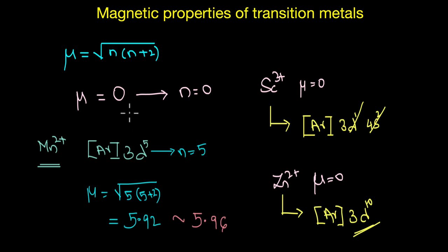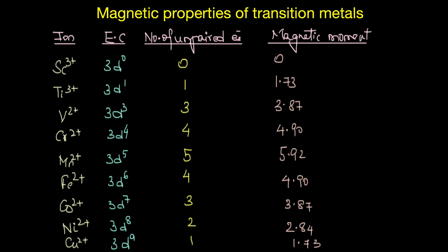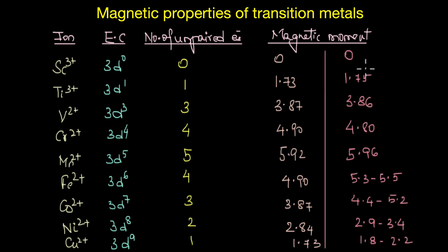You can similarly calculate the magnetic moment for other transition metal ions using this formula. Looking at the trend for ions of the 3d series, the magnetic moment value increases as we go toward the middle of the series — toward manganese — because the number of unpaired electrons is increasing, and then the values start decreasing as the number of unpaired electrons decreases. The calculated values are very close to the experimentally observed values. We will explore more about the magnetic properties of transition metal ions in the next unit on coordination chemistry.